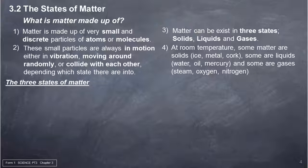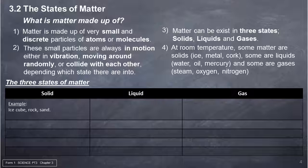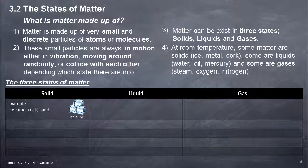The three states of matter. Solid. Examples: Ice cube, rock, sand. Has a definite shape. Has a fixed volume. Has a fixed mass. Does not flow.